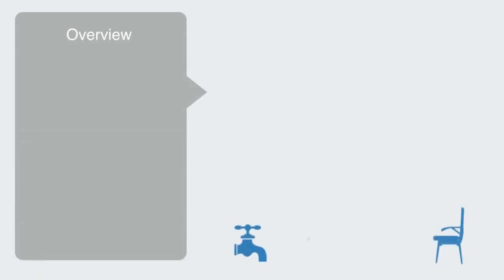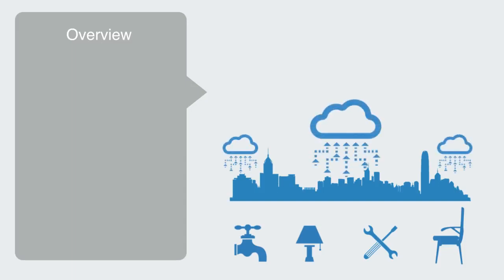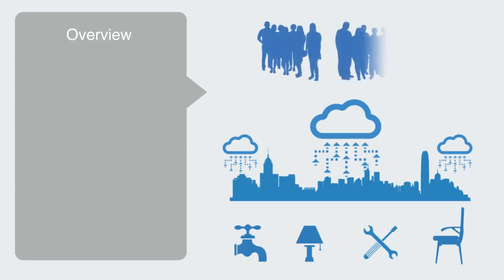So far in this section of the course, we've talked about basic technologies, the complex engineered systems we get out of the aggregation of many different technologies, and the information systems that increasingly control and operate all this technology. In this module, we'll be completing the first section of the course by adding the social domain to this model.